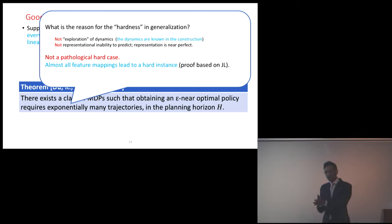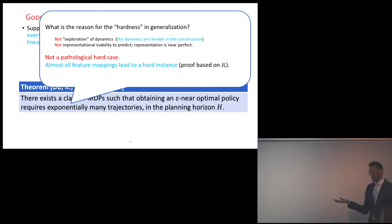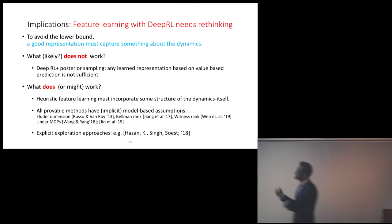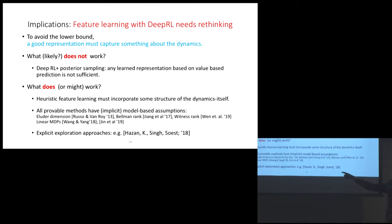This is not a pathological hard case — the construction is really a random construction, and in a sense almost all feature mappings can well-approximate these value functions, but you still can't do RL. The intuition is really one of transfer learning: you can fit well under one distribution, but that doesn't necessarily transfer well to other distributions. This gives some intuition that we might need more out of our representations.